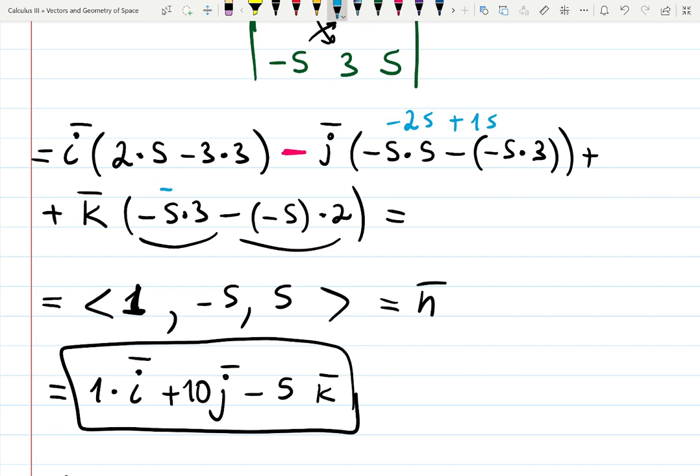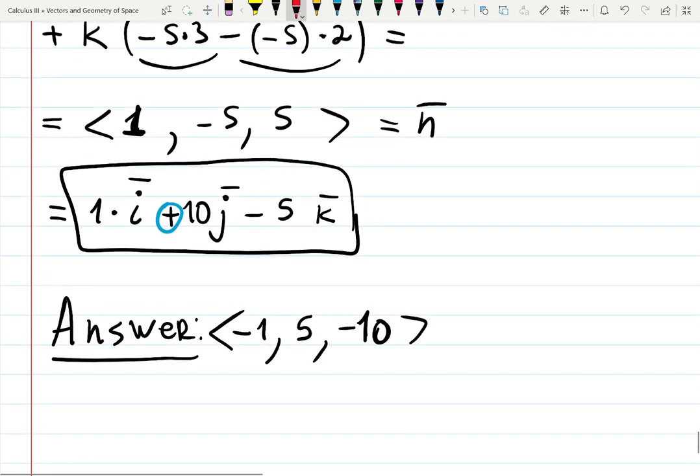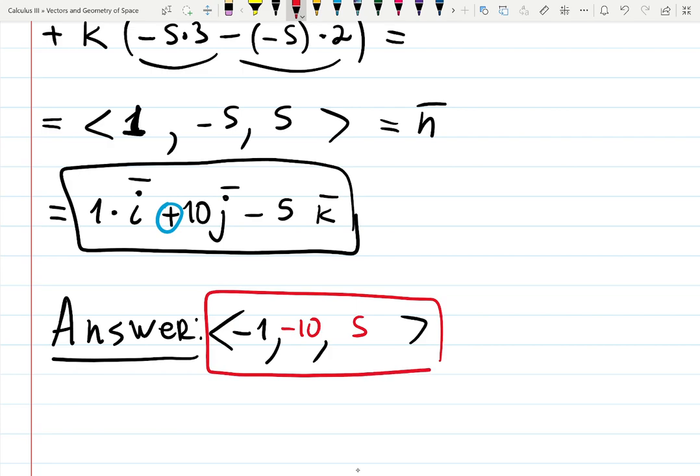And then minus 15 plus 10. So I have a pencil, you know, and then it will help you. And this one is plus because we have minus in front. So that gave us minus 1, minus 10. Minus 1, minus 10, and 5. Like so.